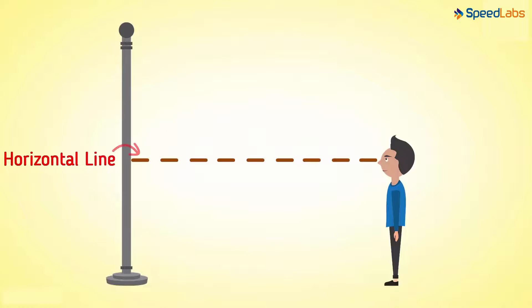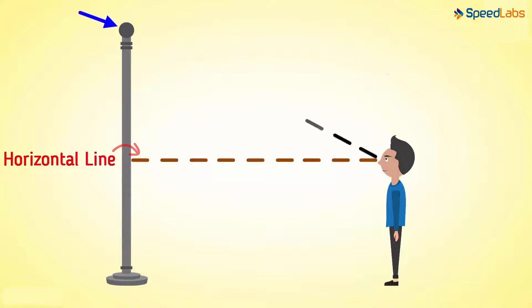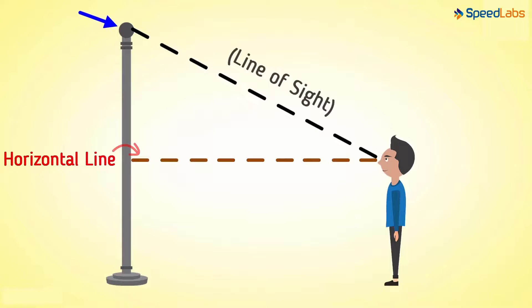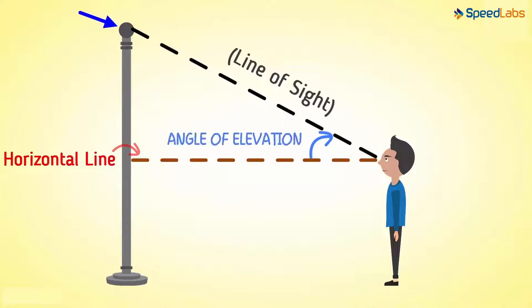Now if the person is looking at the top of the pole, what would be the line of sight in this case? The line drawn from the eye to the top of the pole will be the line of sight. We see that this line of sight makes some angle with this horizontal line. This angle is called the angle of elevation. The angle of elevation of the top of the flagpole is simply the angle that this line of sight makes with the horizontal line.